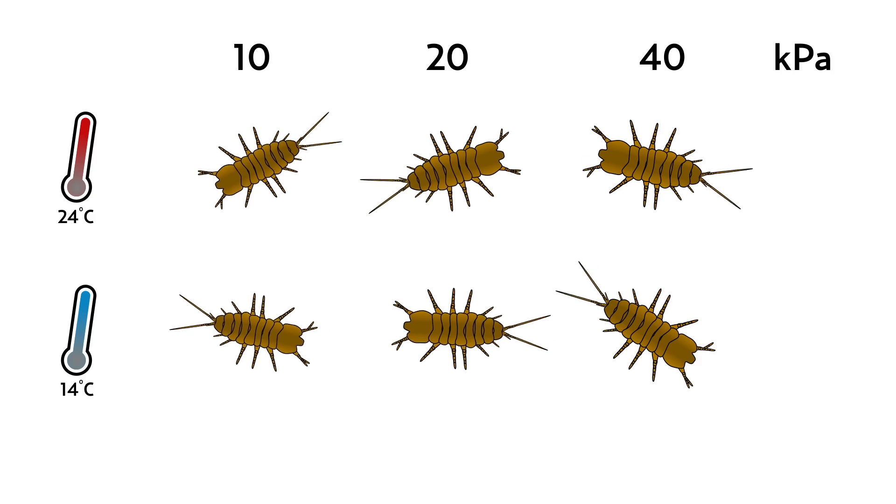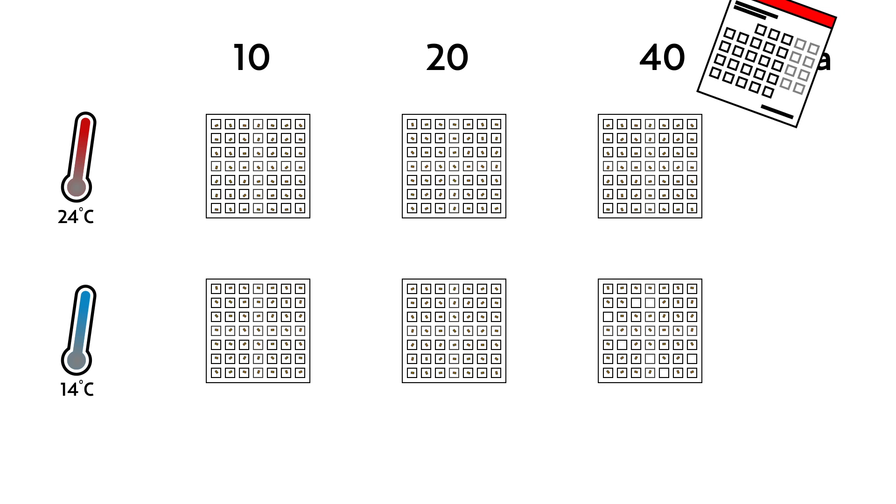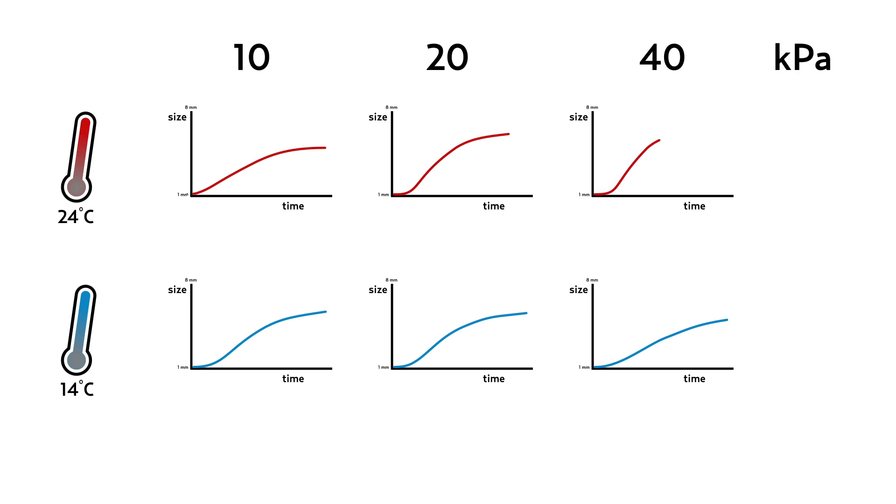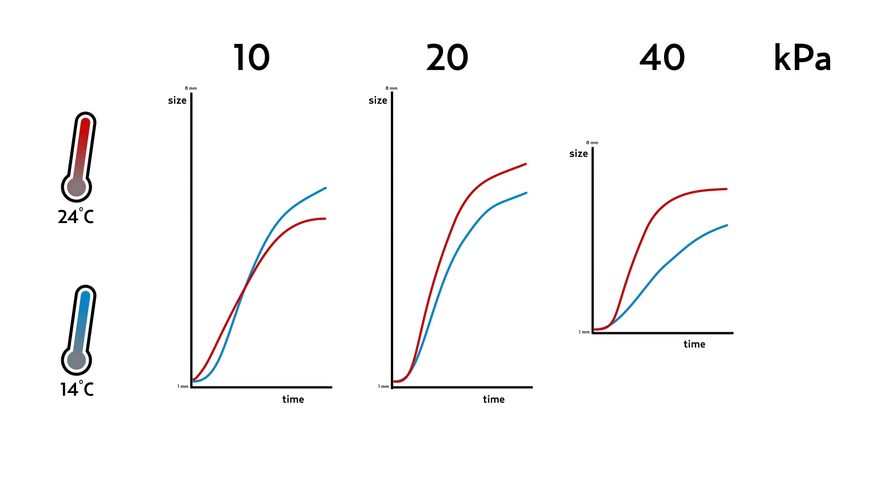To account for mortality, we started with 500 animals in each treatment and measured their body length weekly. We found that temperature increased growth rates and decreased adult size, but only in the low oxygen treatment where oxygen limitation was most likely.